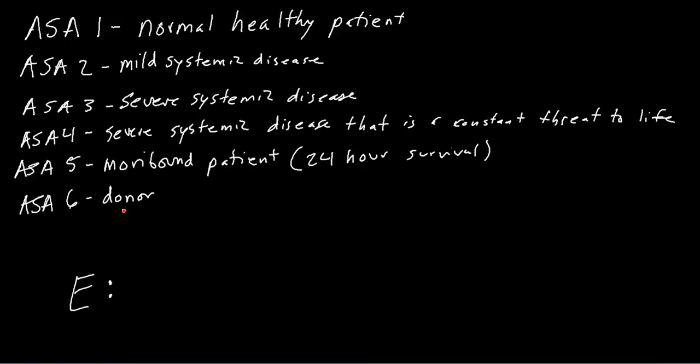In summary, I threw together just in one slide here everything I just talked about. It's easier to see everything on a scale all at once. Down here I want to talk quickly about an ASA of, let's say, ASA 3E. If you see that E thrown onto the end of a classification, it means the surgery was an emergency surgery.